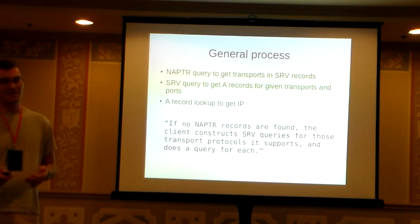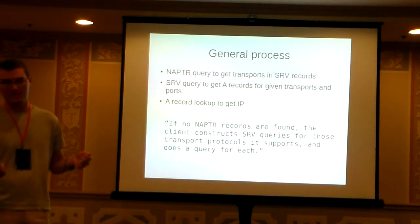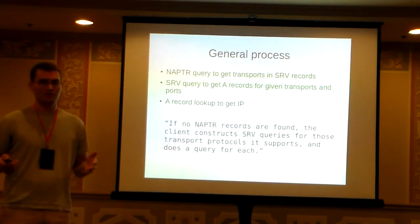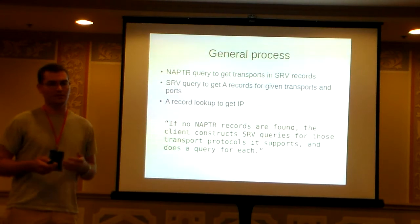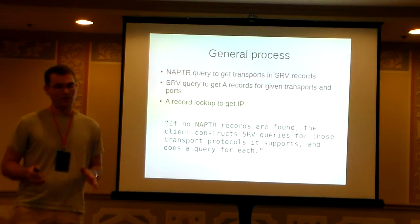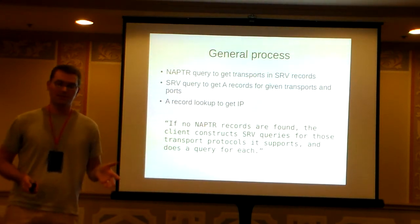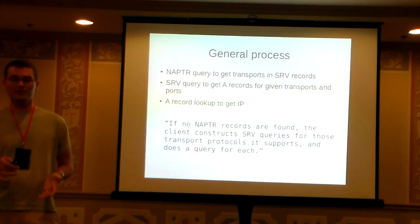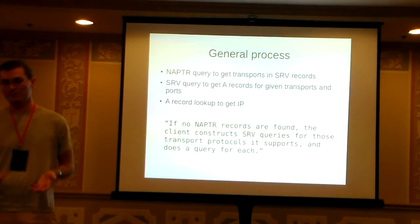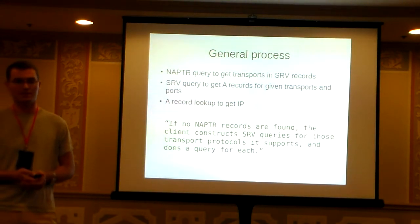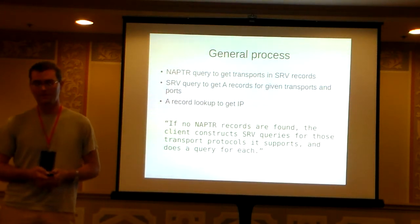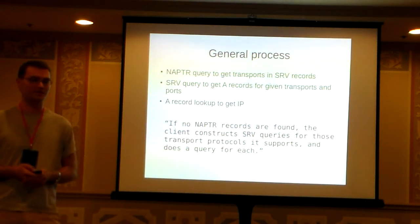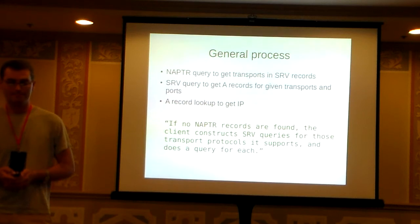The RFC says that if there are no NAPTR records found, the client should construct SRV queries for every protocol it supports. This is the one place where OpenSIPS doesn't fit exactly — it doesn't generate multiple SRV requests for different protocols.